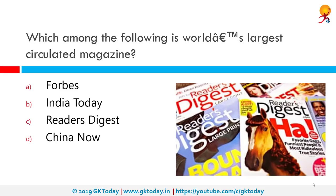Which among the following is the world's largest circulated magazine? The correct answer is Reader's Digest. Reader's Digest is an American general interest family magazine published 10 times a year, with a global circulation of 10.5 million, making it the largest paid circulation magazine in the world.